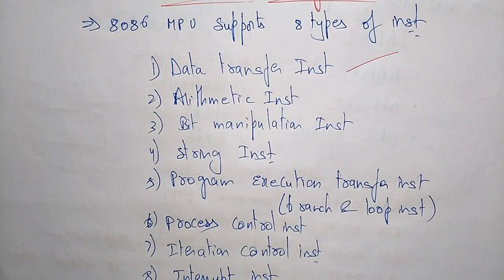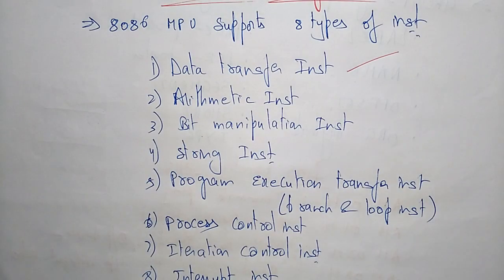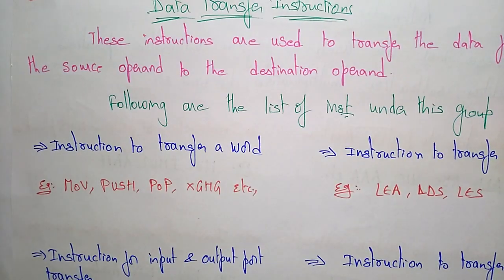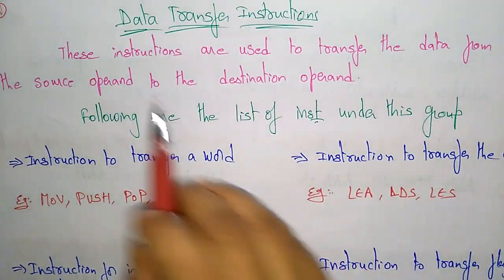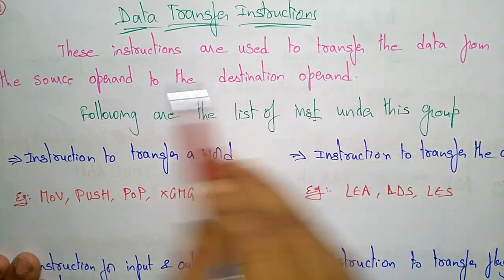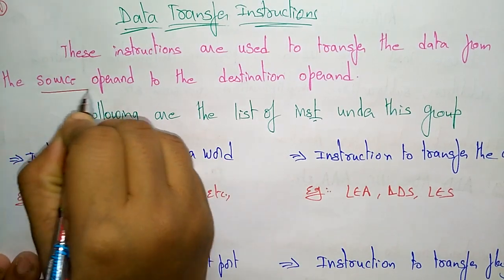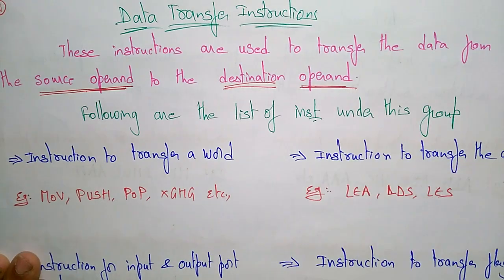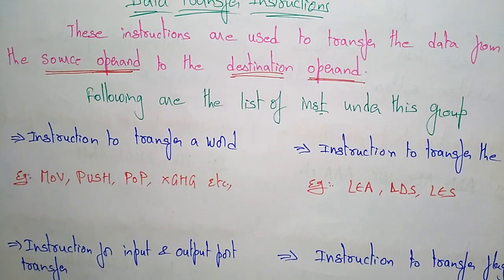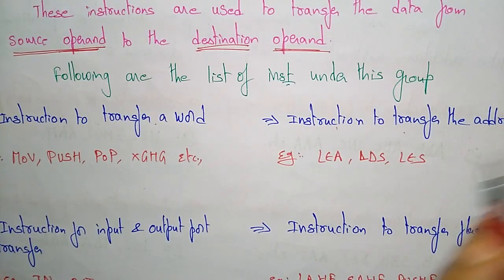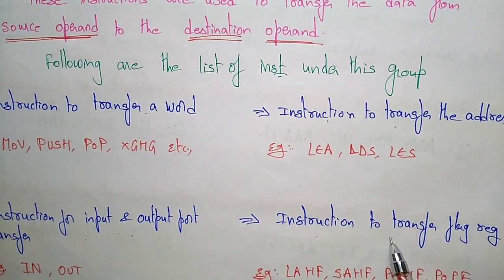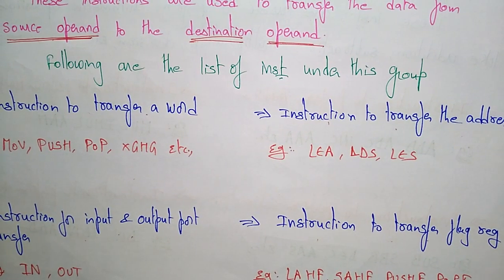Now let us discuss them one by one. The first one is the data transfer instruction. The data transfer instruction simply transfers the data from one location to another location. These instructions are used to transfer data from the source operand to the destination operand. There are four types: instruction to transfer a word, instruction to transfer an address, instruction for input and output transfer, and instruction to transfer the flag register.